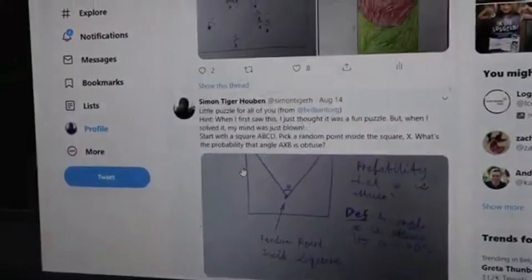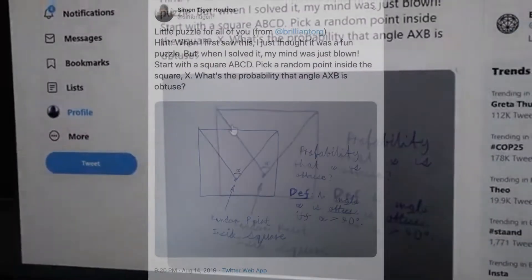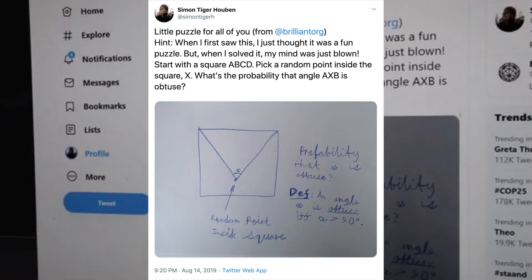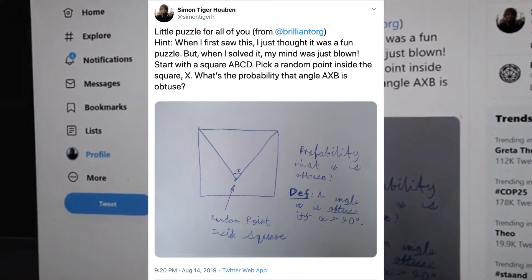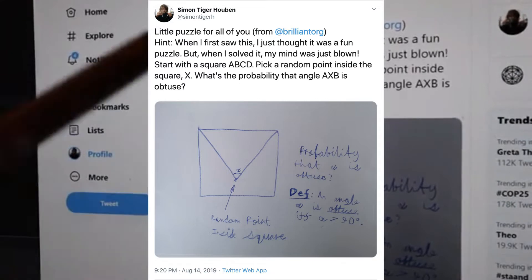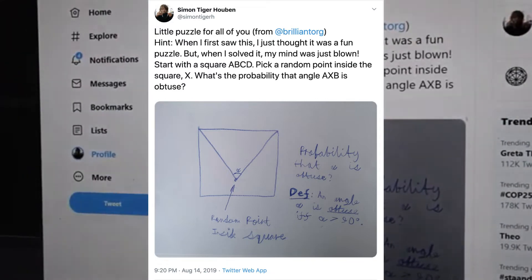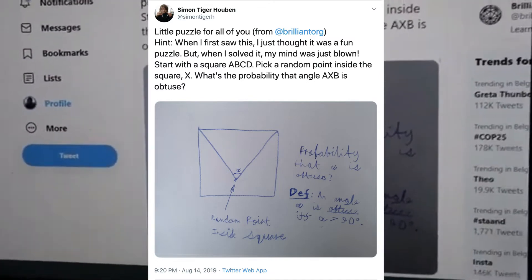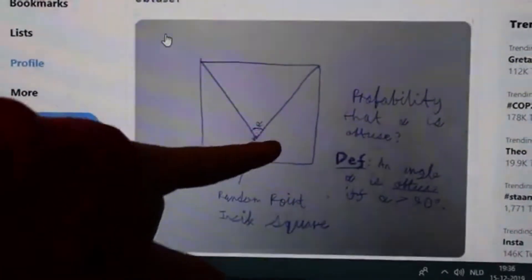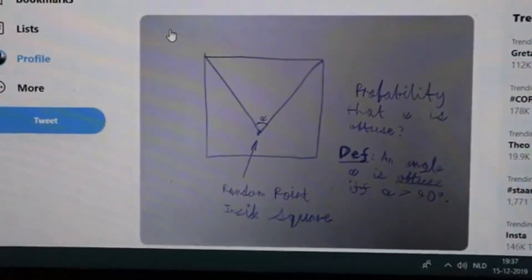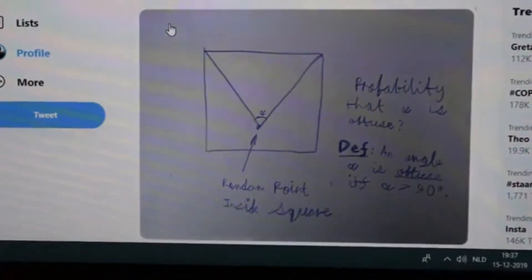Ah, this is what I'm looking for. So this is not actually the puzzle that this is solving. This is a little puzzle that I made with a square. I put a random point inside the square — this is from Brilliant, by the way — and then I put a little angle here.